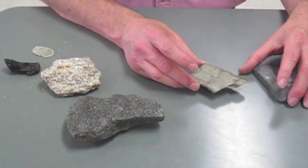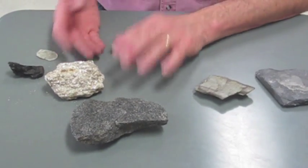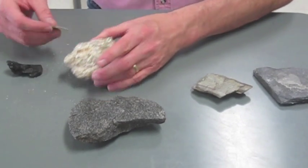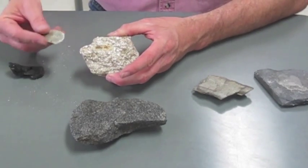And then as it continues to get metamorphosed, it turns into a schist. Schists are commonly defined by the minerals they contain. So this is a muscovite schist. Here's a sheet of muscovite.